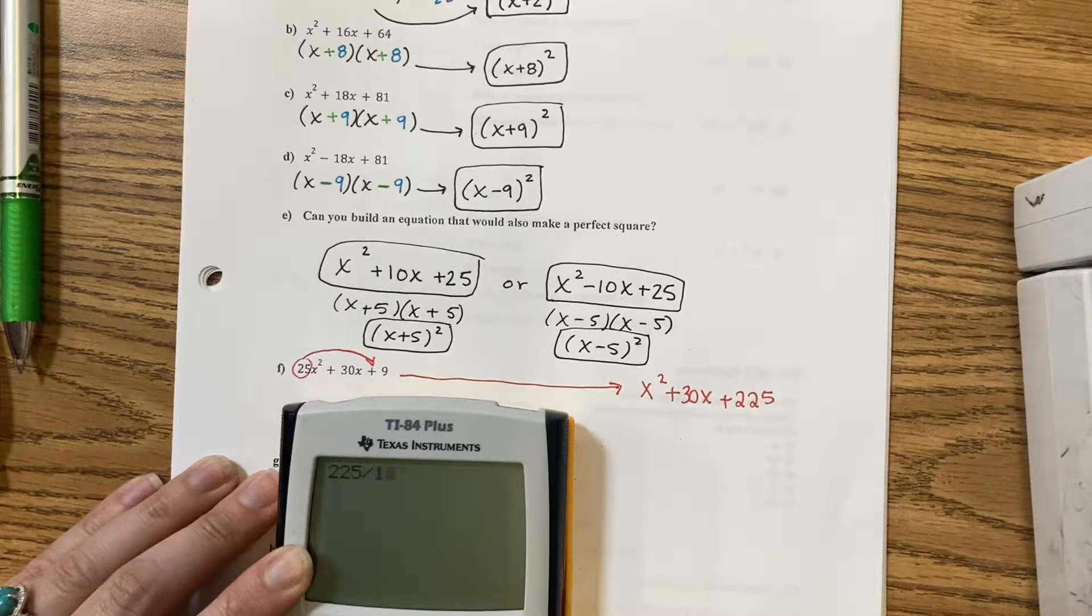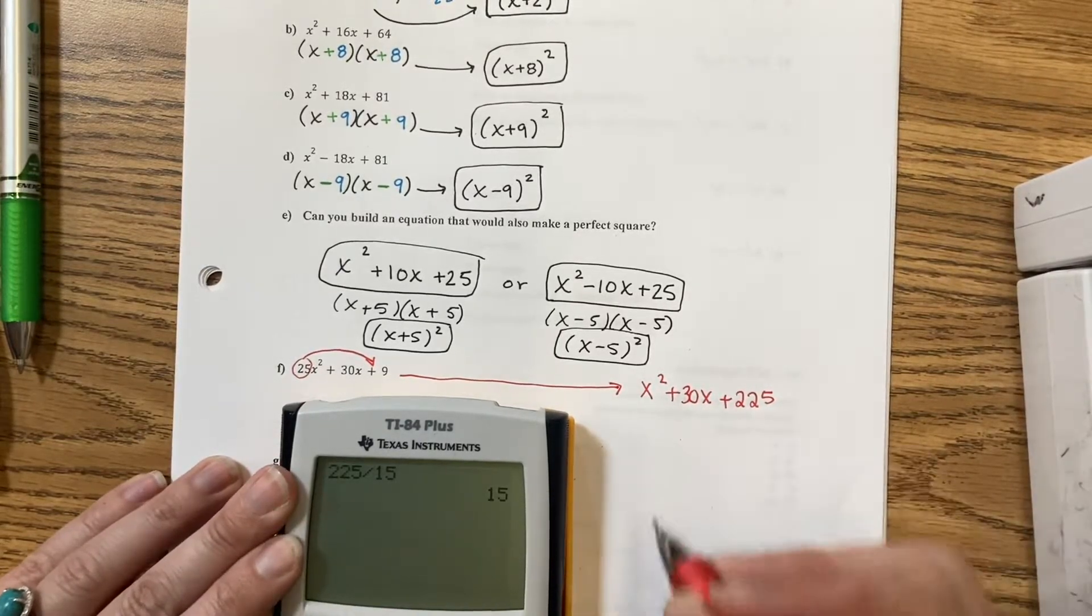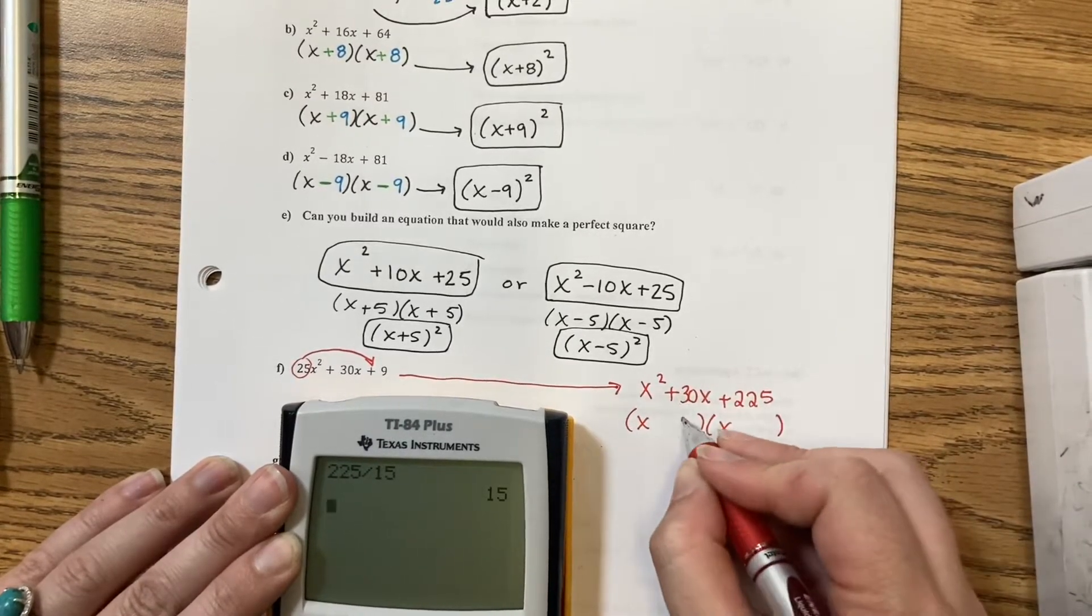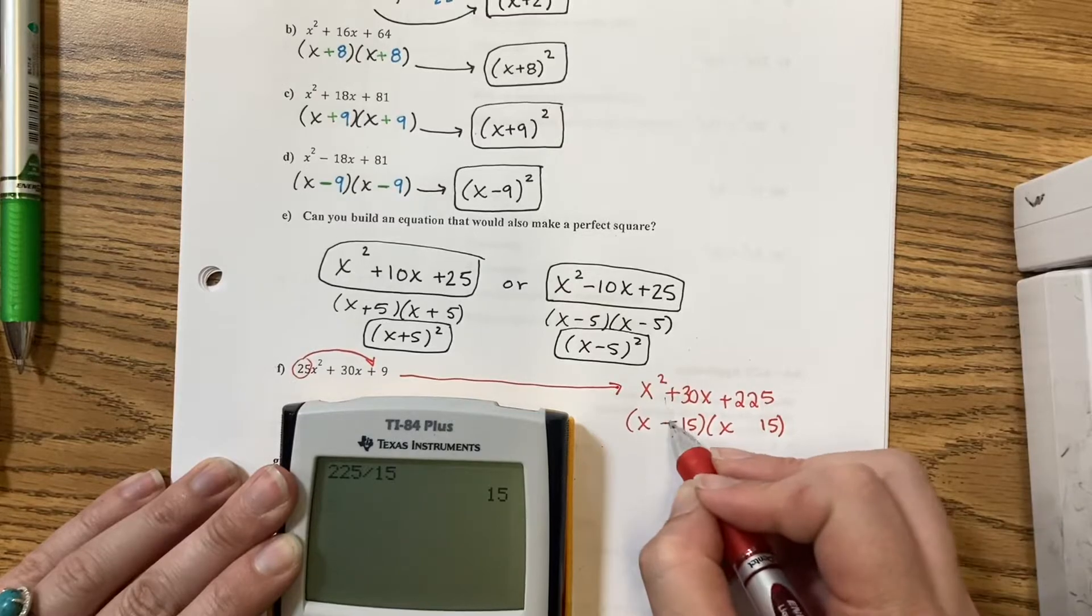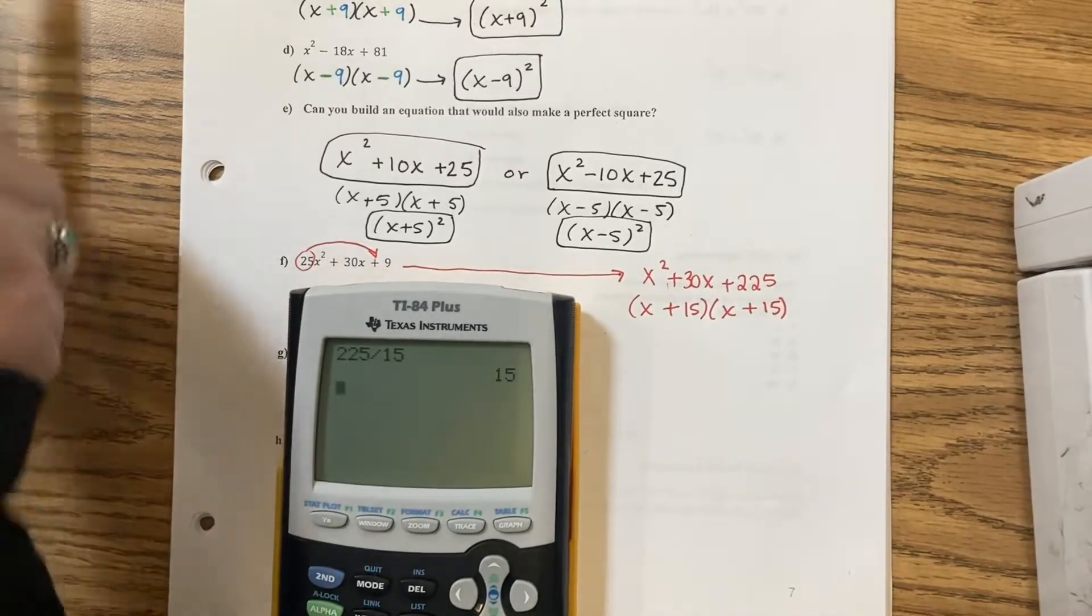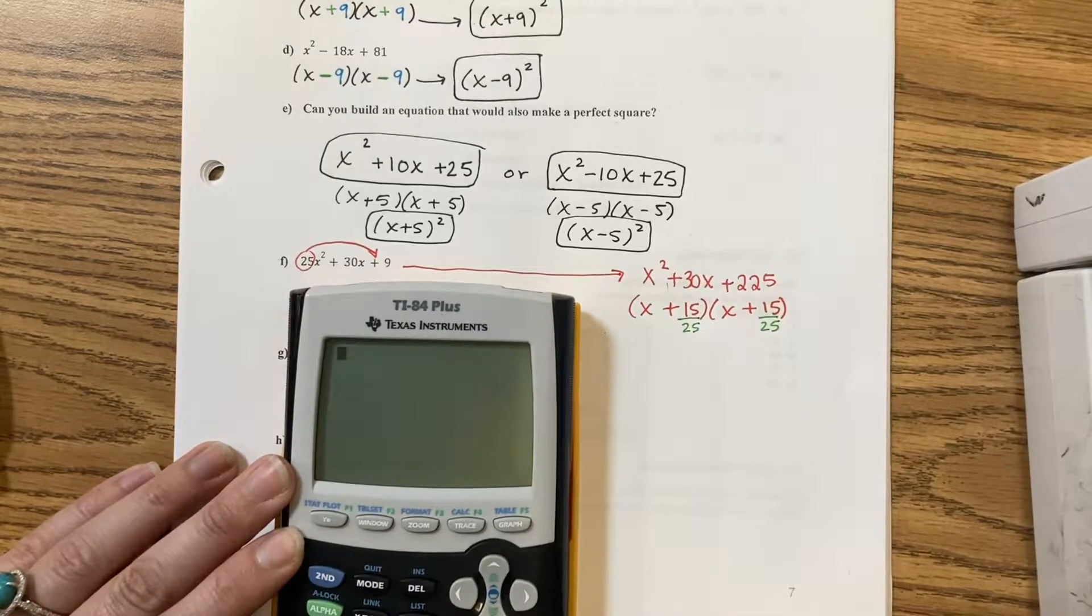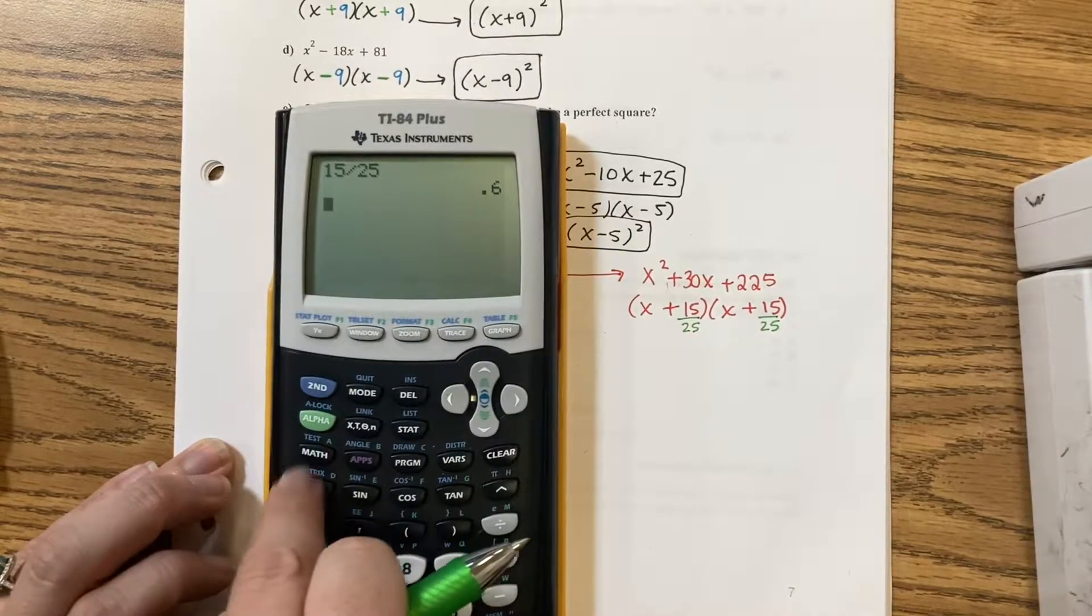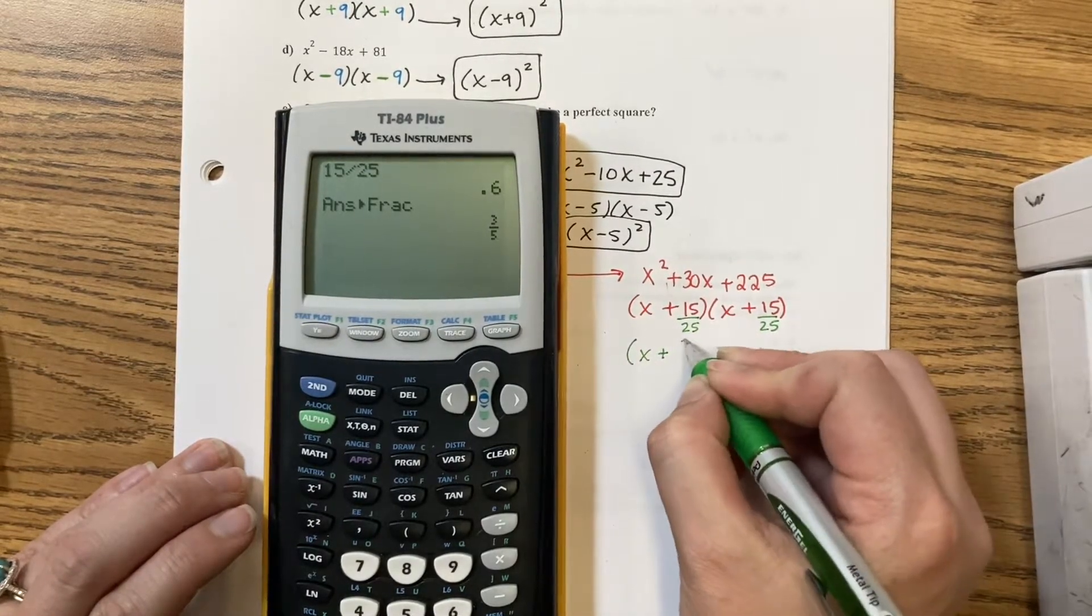Now, 225 is divisible by, 225 divided by, let's try 15. Yeah, 15. It ends in 5, so that's why I tried 15. So, I would get x and x, 15 and 15, and then to get plus 30 from 15 and 15, I need plus and plus. I then have to divide the 25 back out. 15 divided by 25 is going to reduce. So you click math, math, enter, enter.